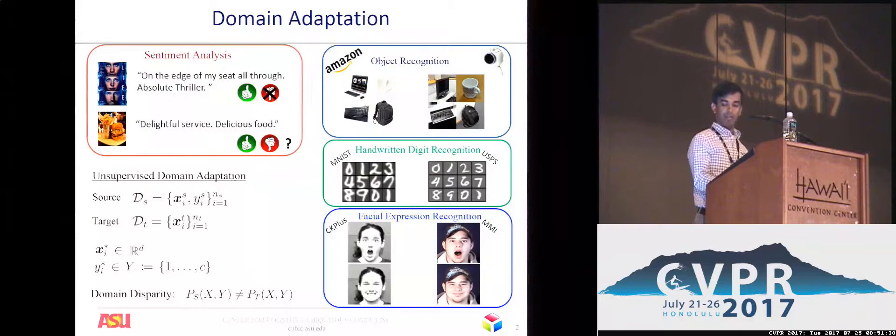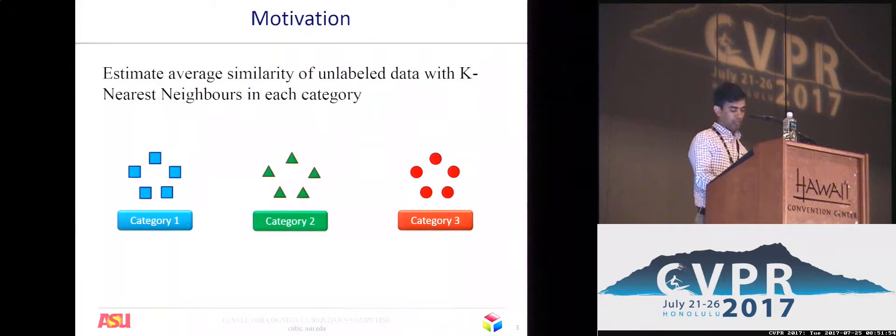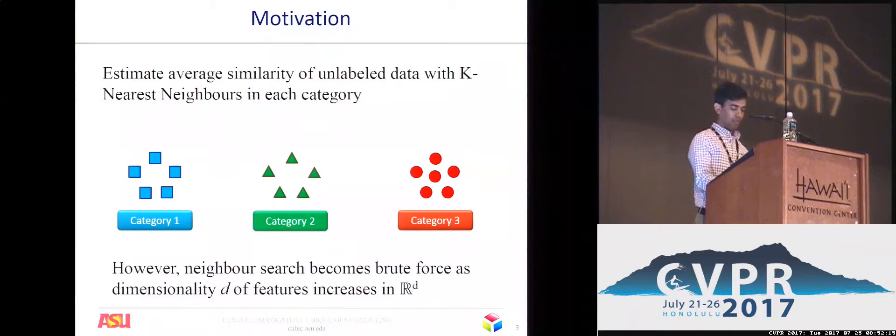Given a target data point, we would like to assign it a label based on the average similarity it has with K nearest neighbors in each category. We therefore need to estimate these K nearest neighbors from each category to calculate the average similarity of the target data point with that category. However, estimating the K nearest neighbors could often become inefficient as a brute force search as the dimensionality of the features increases.